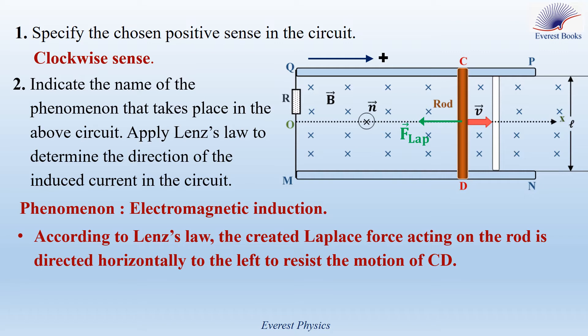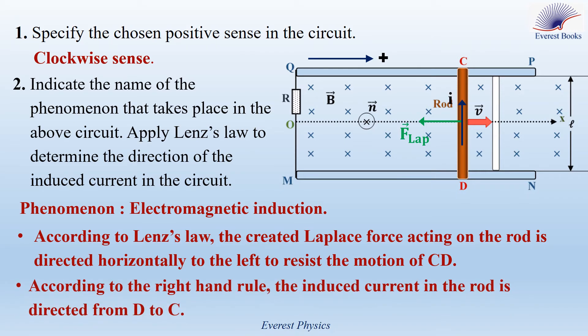Now applying the right-hand rule: we place the right hand on rod CD so that the fingers are directed inward (along B) and the palm faces left. We observe that the thumb points from D to C. Therefore, the induced current in the rod is directed from D to C.